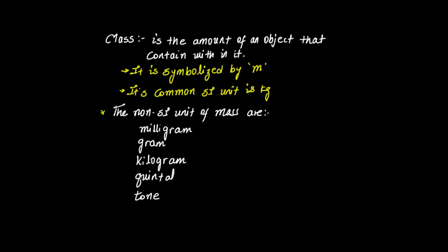Mass by definition is the amount of matter contained within an object. Weight is mass times gravity — weight depends on gravity, while mass does not. The first thing is that this is a mass. It is symbolized by m. The common symbol of mass is m.